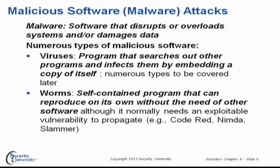Then we go into autopilot mode, if you will — we'll talk about worms. Worms are a self-contained program that can reproduce on their own without the need for other software, although normally they need some type of exploitable vulnerability to propagate. For example, the Code Red, the NIMDA, and the Slammer attacks — if you haven't patched your systems, these open up opportunities for worms to infect your system and often use you as a launching point to attack other systems.